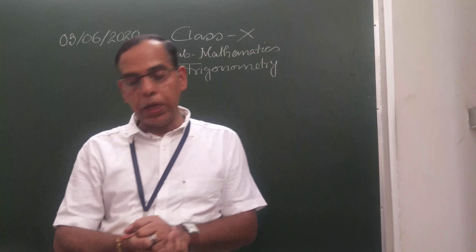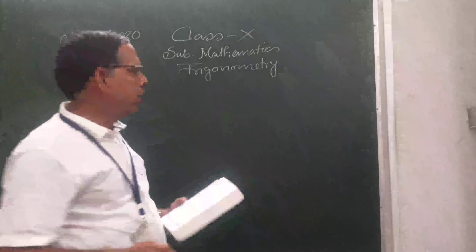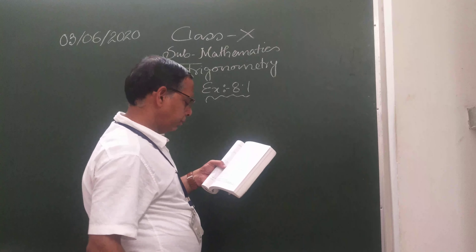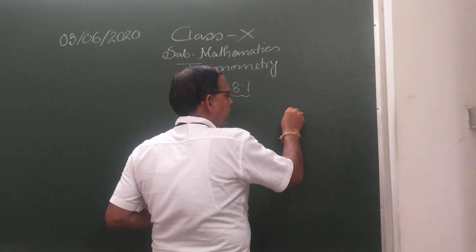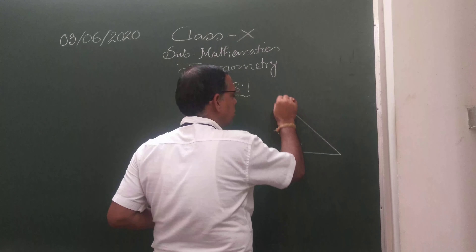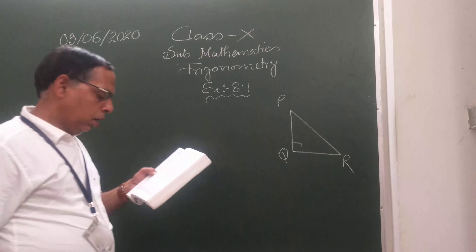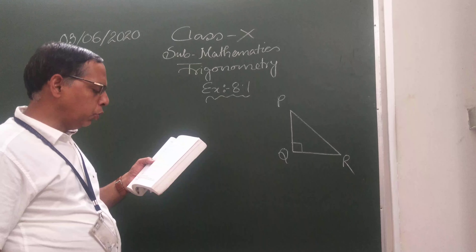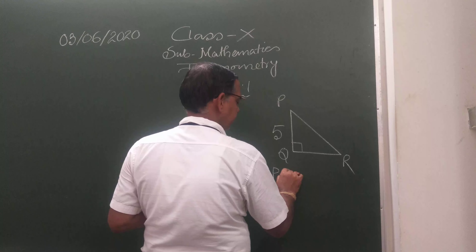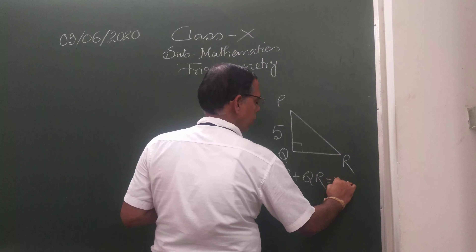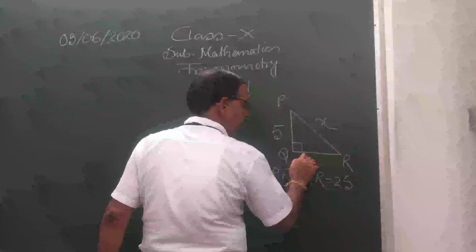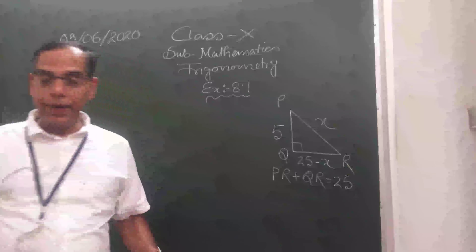Now let us start question number 10, which is left from exercise 8.1. Draw a right angle triangle with right angle at Q — vertices P, Q, R — where PR + QR = 25 and PQ = 5. Now suppose PR = X, then QR = 25 − X.